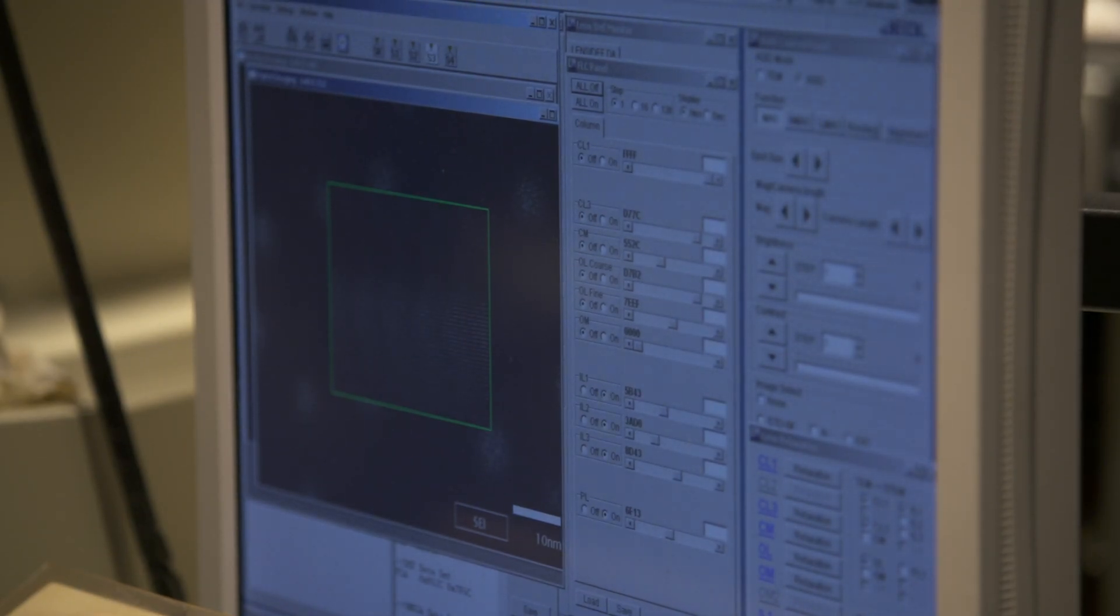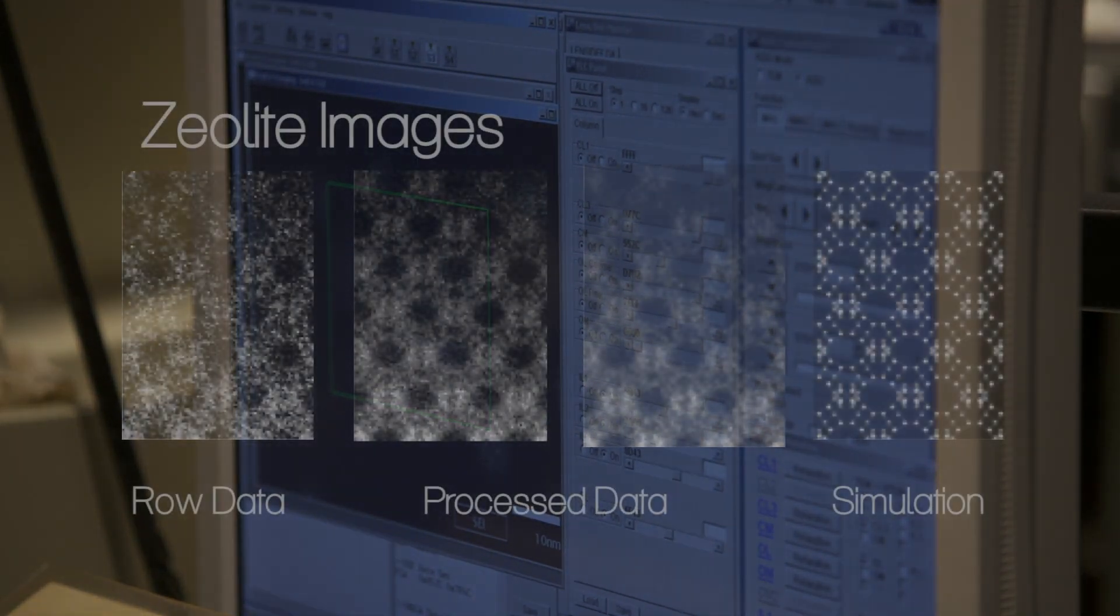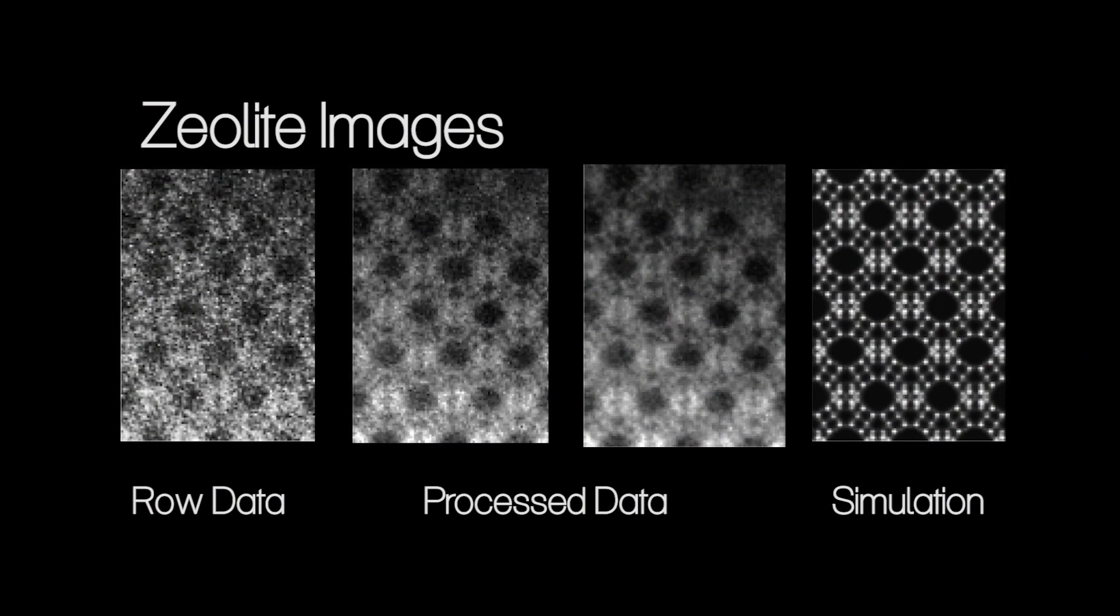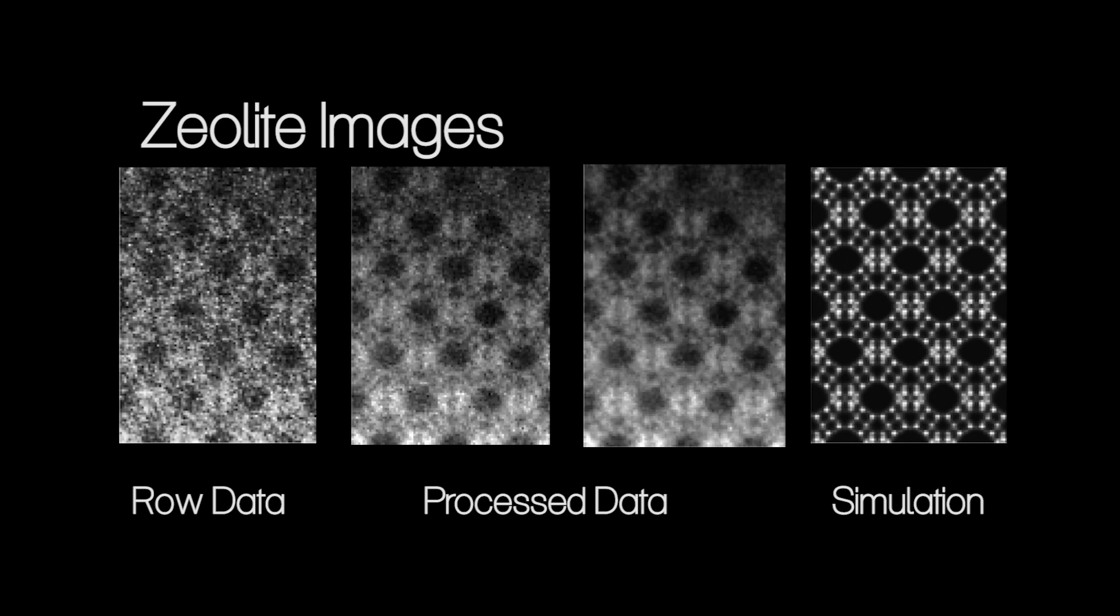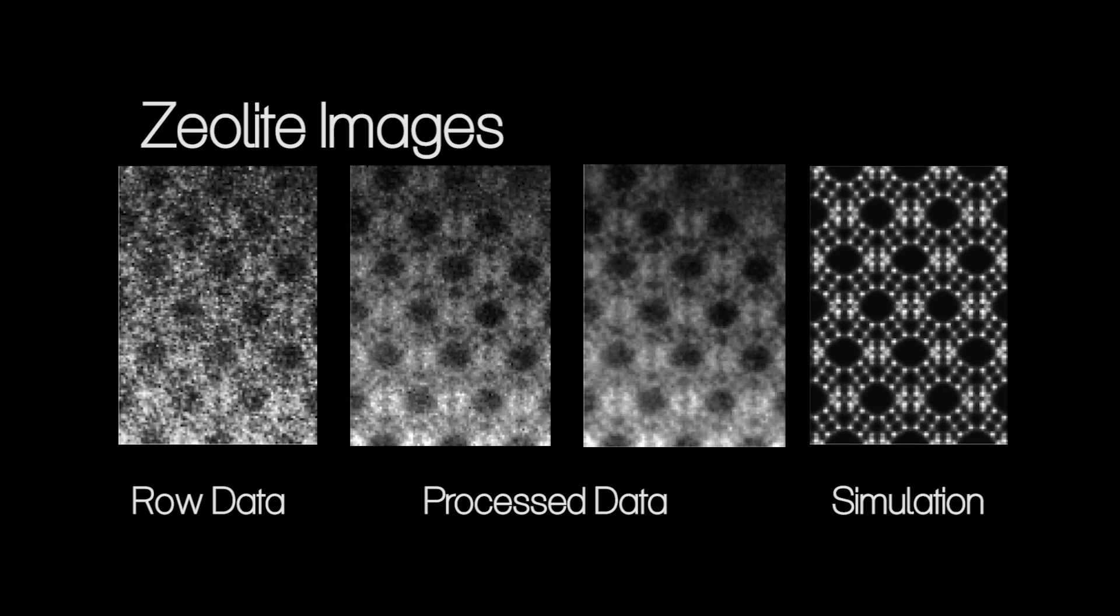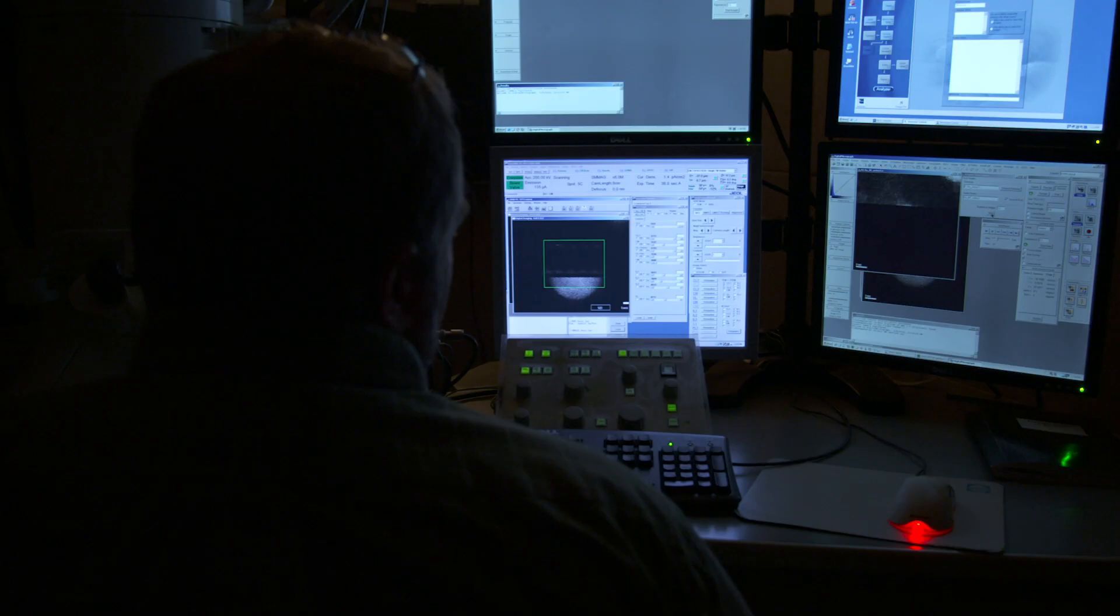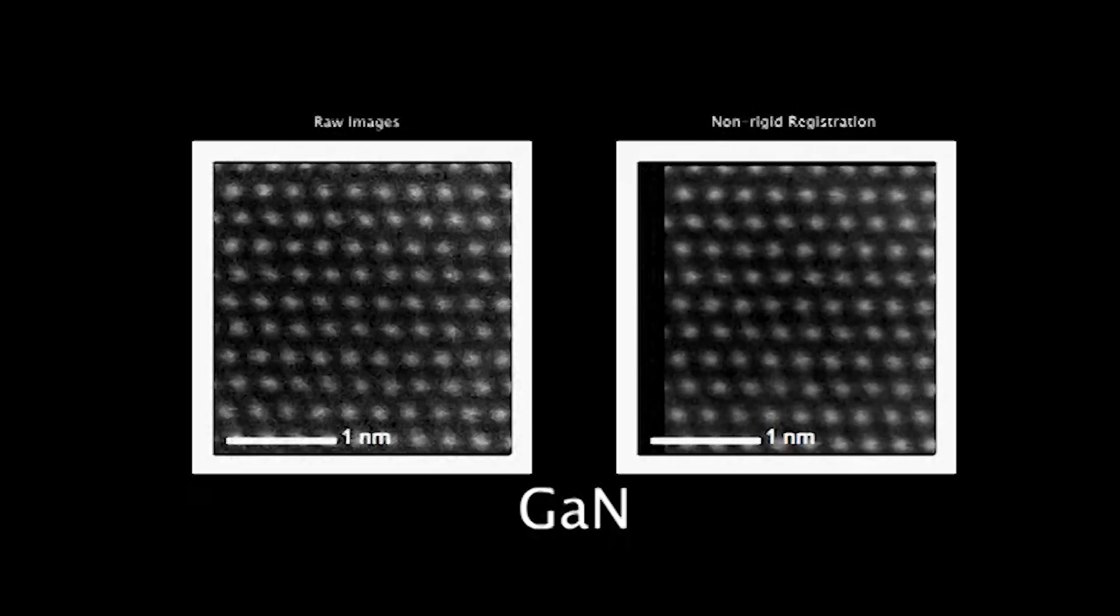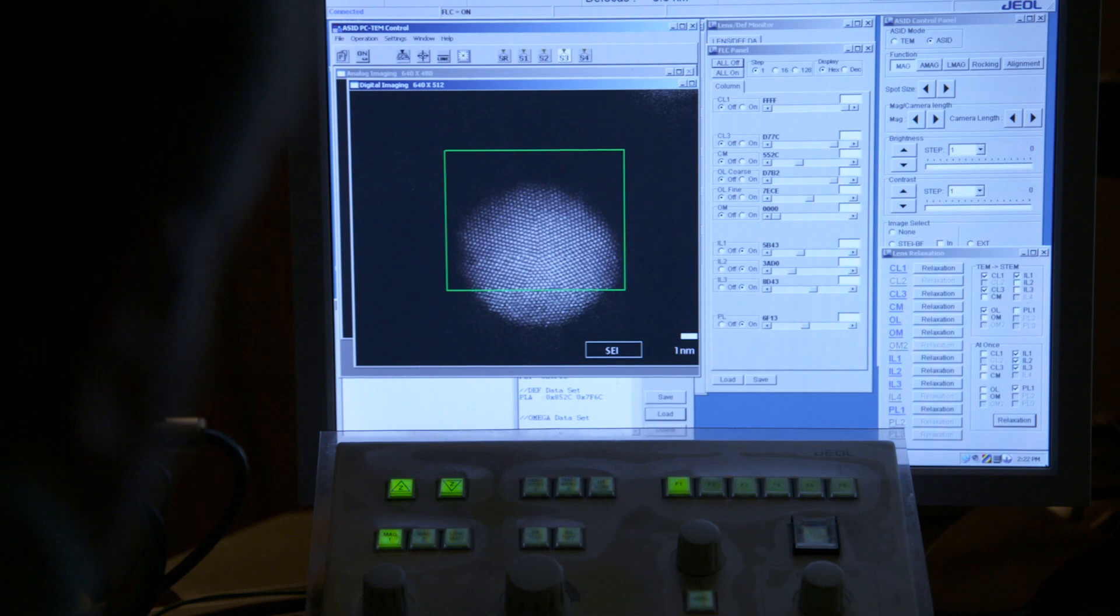And now the questions become: are the changes that I see in this image real to my sample or are they driven by my measurement technique? And the mathematicians have been able to help us develop a formalism where we can acquire a series of images and then register them pixel by pixel, allowing us to extract higher quality data from effectively very low signal and noise input.